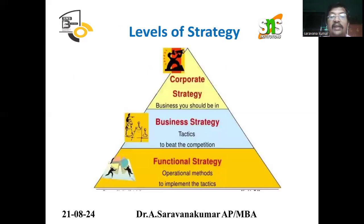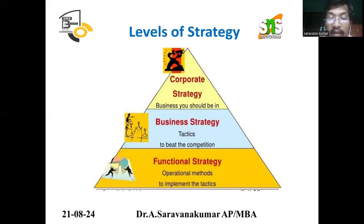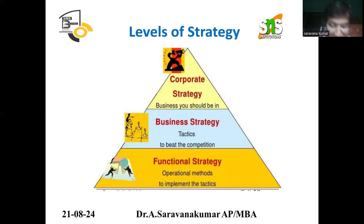There are three levels of strategy: corporate strategy, business strategy, and functional strategy. In corporate strategy, it is about which business you should be in. Business strategy is about what tactics you are using to beat the competition. Functional strategy involves the operational methods to implement those tactics.